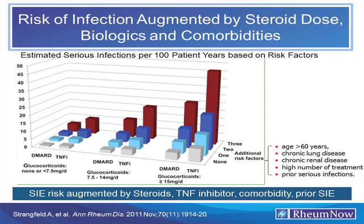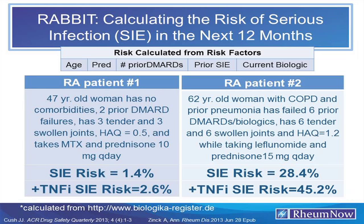This becomes the basis for the RABIT risk score, which uses age, prednisone dose, number of prior DMARDs, prior serious infectious events, and current biologic use. Patient example one: a 47-year-old woman with no comorbidities, two prior DMARDs, three tender and three swollen joints, HAQ of 0.5, on methotrexate and 10 mg/day prednisone. Her SIE risk is 1.4%. Put her on a TNF inhibitor and it doubles to 2.6%.